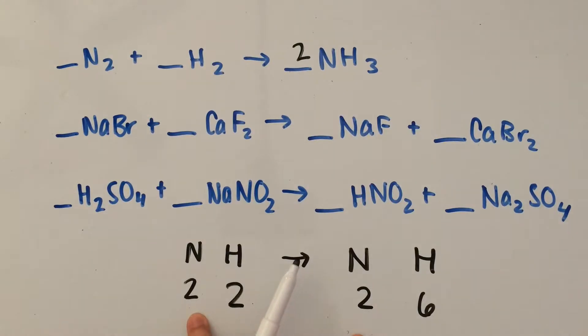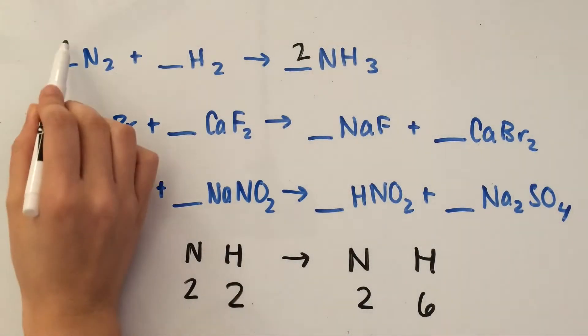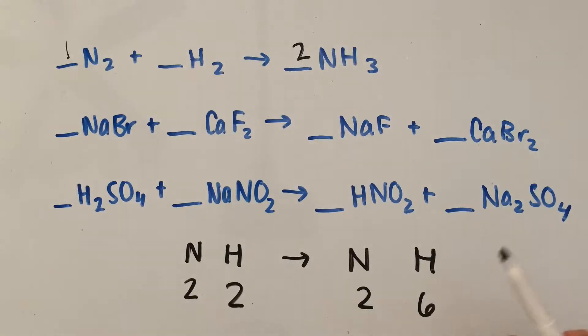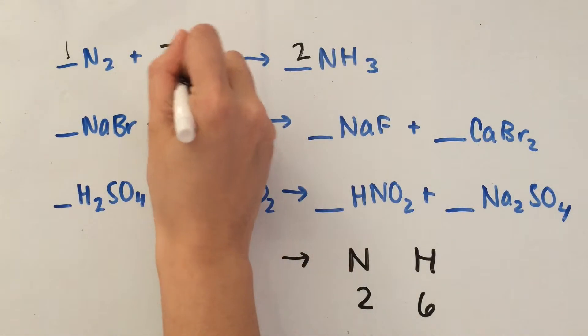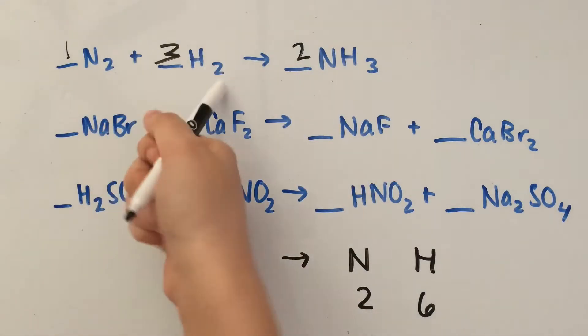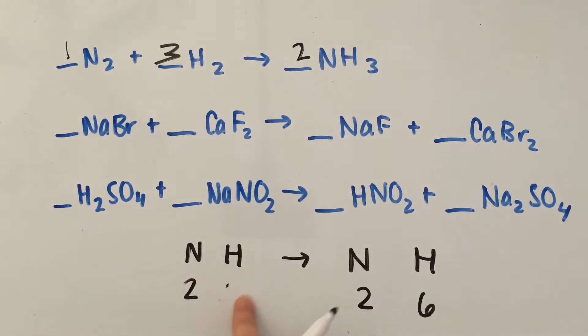Now the N's are good, so we can leave this as one. We need to change this to make the left side have six H's instead of just two. We can put a three here because three times two is six, so instead of two we'll have six hydrogens.